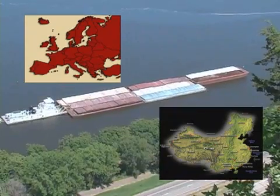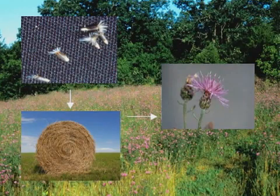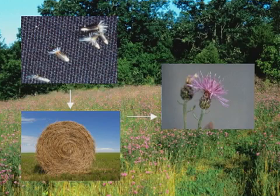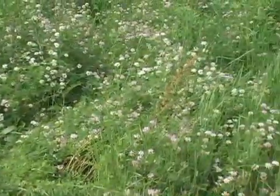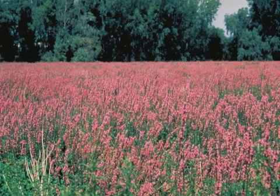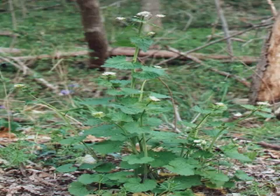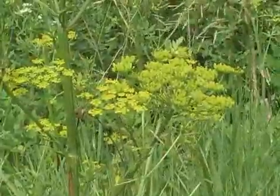A lot of the invasive species that we have come from Europe and from China. They can come over either by accident — for example, spotted knapweed came over as seeds in contaminated hay that had been brought over for cattle here in the U.S. But many plants are brought over purposely. People brought plants they found beautiful in their homeland and planted them at their new home, like purple loosestrife. They also brought over plants like garlic mustard as cooking herbs. But most of our plants are actually brought over for gardening purposes. People brought them over and put them into botanical gardens to showcase them, and then others wanted them in their own yards.